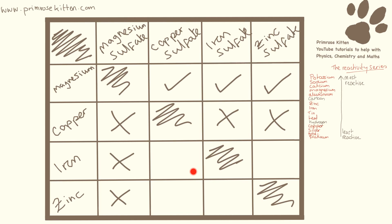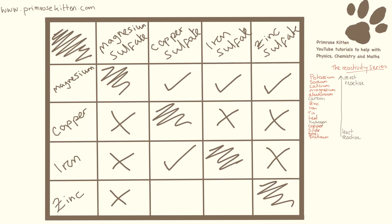Now we have iron and copper sulphate. Iron is higher on the series, so it's more reactive and will take the sulphate away from the copper — we are going to get a reaction, and that's what we saw. Iron and zinc sulphate: iron and zinc are very close, but iron is still below zinc in the reactivity series, so no reaction. Zinc and copper sulphate: zinc is higher, copper is less reactive, so we do get a reaction. Zinc and iron sulphate: zinc is above iron, so we get a reaction — exactly what we saw in the practical.